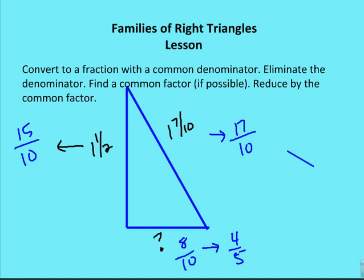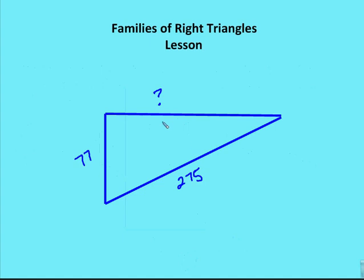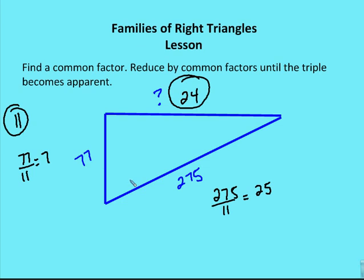I have one more problem for you. So I have 77, 275, and another question mark. What we want to do is find a common factor in each of these values. It ends up being that the common factor between 77 and 275 is 11. So when we reduce by the common factor, we find that we have a 7, 25, and then 24 for one of the legs. So in this case, when the value is in a number, we want to find the factors of each of the given values and reduce the given values by the common factors until the triple becomes apparent.